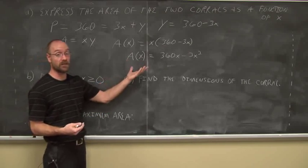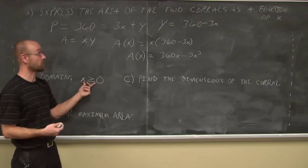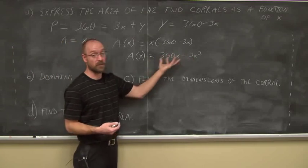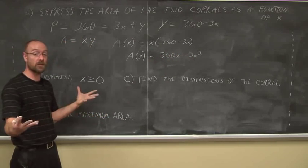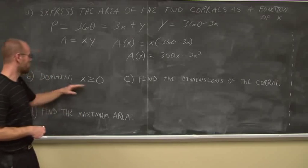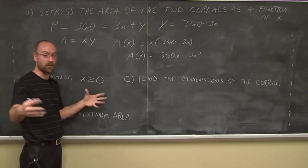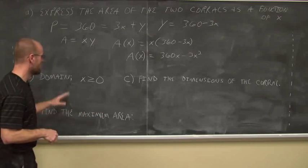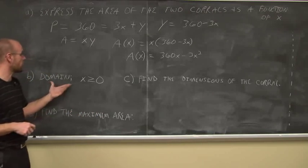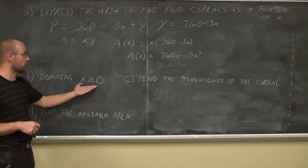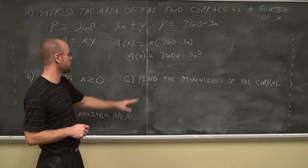Even if it's 0, it kind of doesn't make sense, because we just have a straight line of fencing that isn't enclosing any area. The area would be 0 if x was 0. But we're still utilizing all the fence. It's possible, but no rancher is going to build just a straight fence to enclose anything. So we use a little bit of critical thinking. Our domain is x must be greater than or equal to 0. We're not going to have a negative distance.